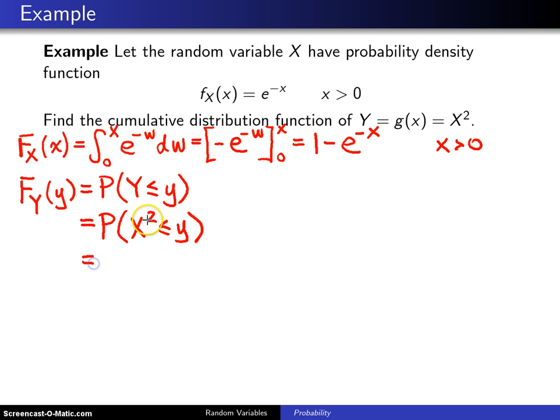The third step is to do algebra on the inequality to isolate X, and that's taking the positive square root of both sides. So now we have the probability X ≤ √y.